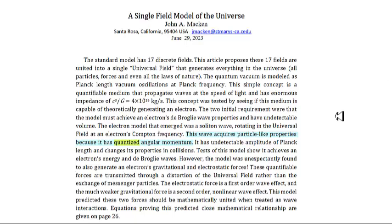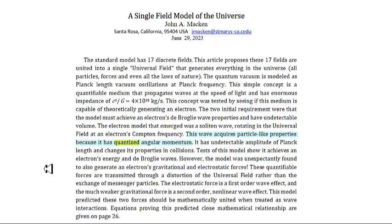One of the reasons I'm making this now is I'm reviewing another paper by John Macken called 'A Single Field Model of the Universe.' It's a really great paper and I'm really enjoying reading it. But there's one point of contention between John and me, and it has to do with modified unit analysis. In his abstract he says the wave acquires particle-like properties because it has quantized angular momentum. So we'll be talking about angular momentum, its units, and what quantized angular momentum means. After this video, I'll do a proper review of the paper.